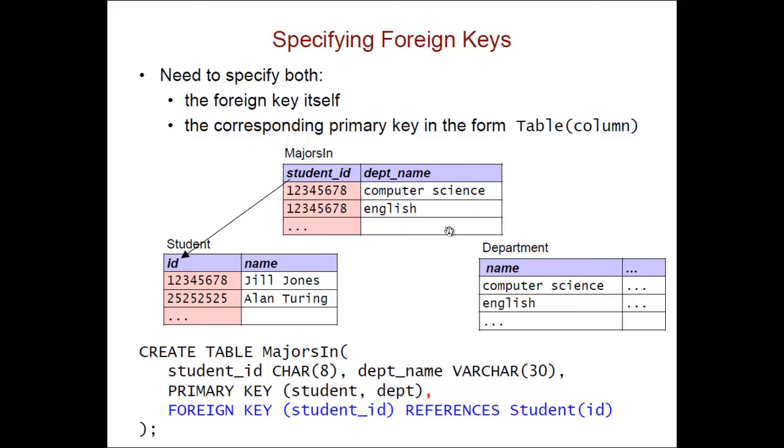Similarly the department name column in MajorsIn refers to the name column in Department and we can go ahead and specify that using the same syntax. So FOREIGN KEY department_name REFERENCES Department(name) and then we need the close parens and semicolon at the very end for the entire CREATE TABLE command.